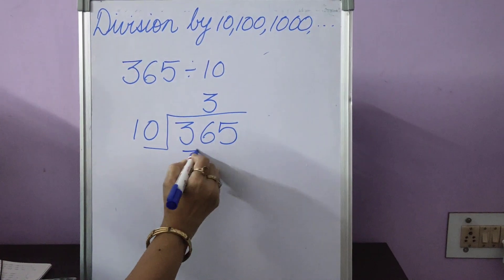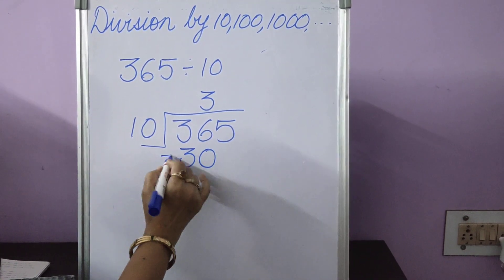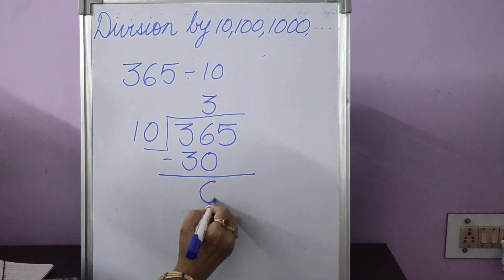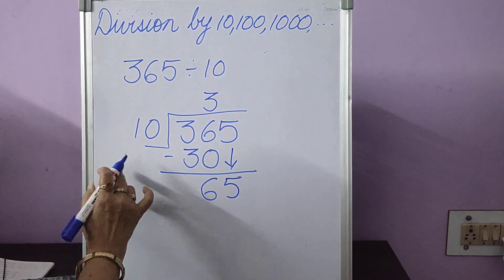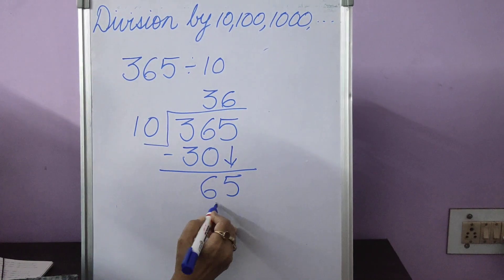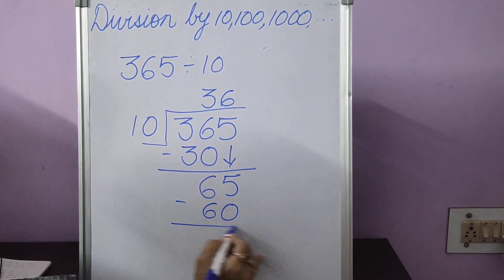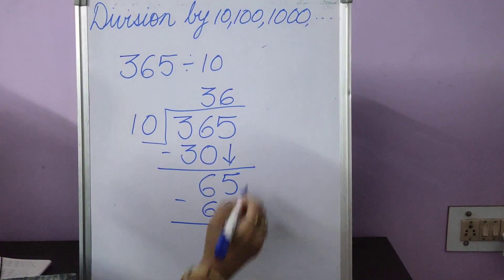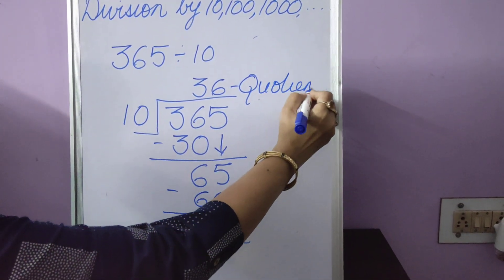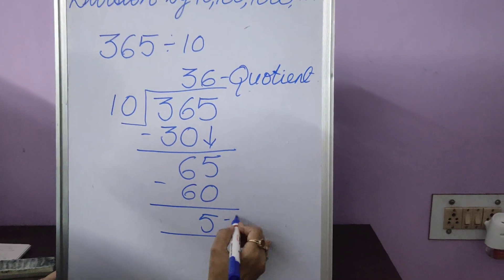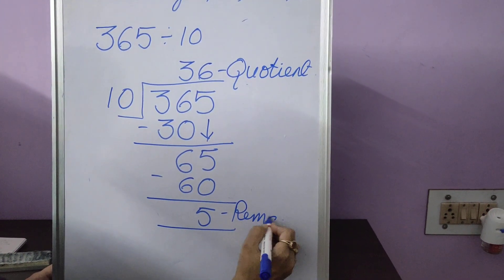So 10 threes are 30. 6 minus 0 is 6, bring down 5. Again table of 10, 10 sixes are 60, minus 5, no number to be brought down. So 36 is the quotient and 5 is the remainder.